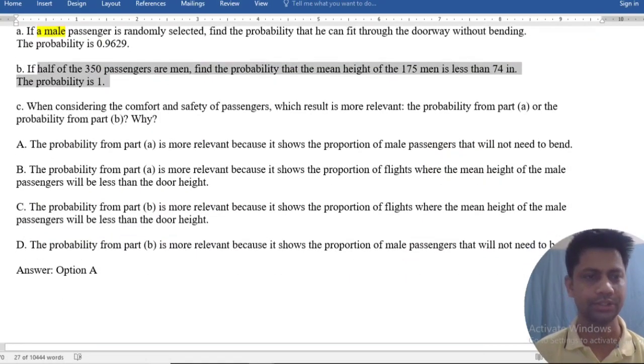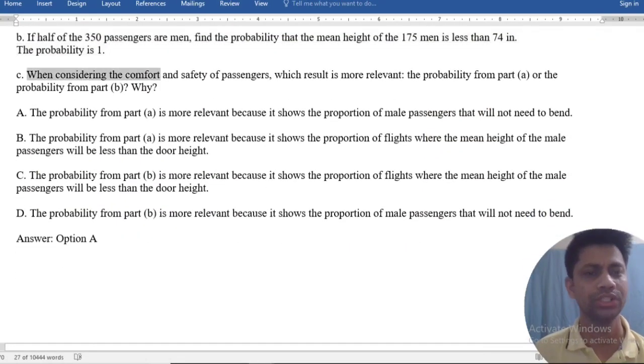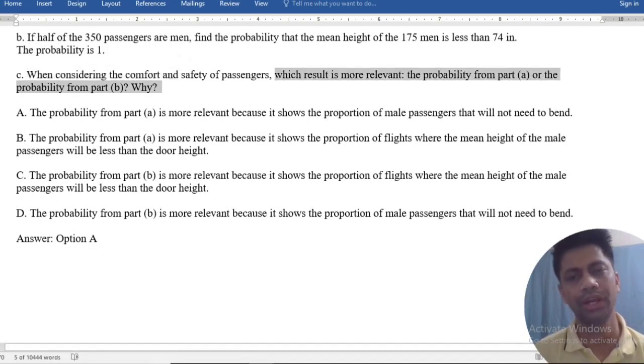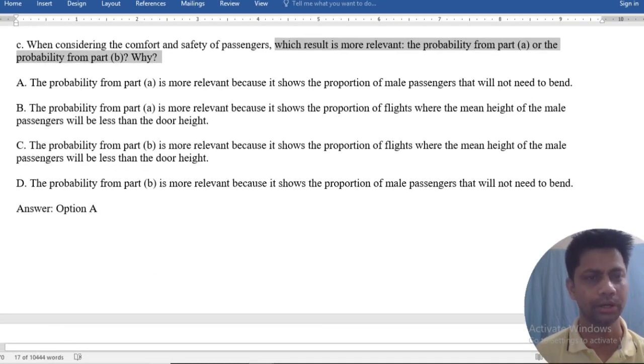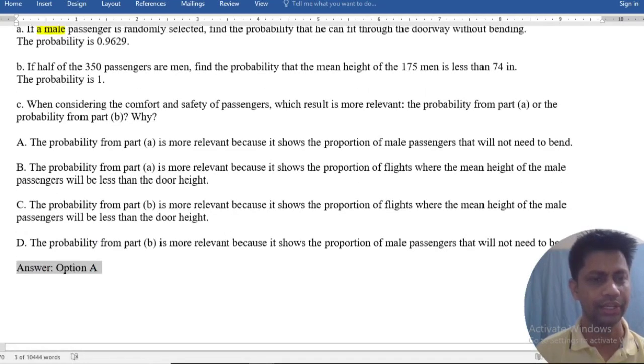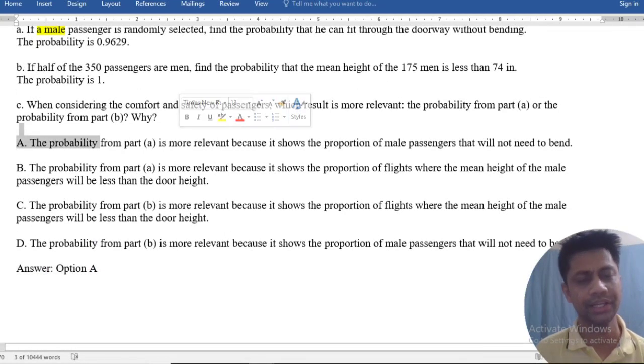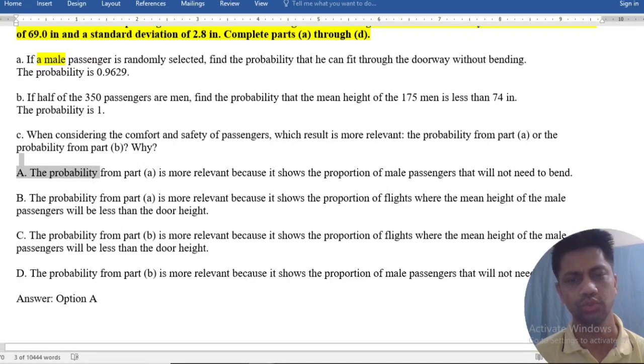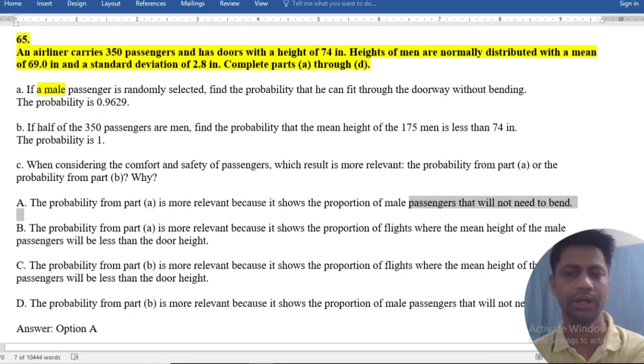Part C: Considering the comfort and safety of passengers, which result is more relevant, the probability from part A or the probability from part B? Our answer is option A. The probability from part A is more relevant because it shows the proportion of male passengers that need not bend. This is our result. Thanks for watching this video. Bye-bye.